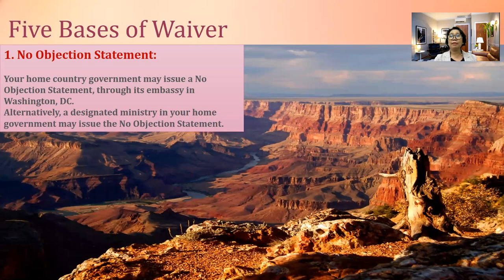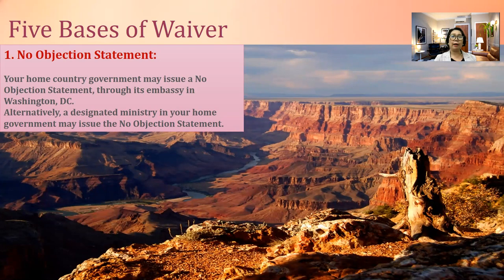There are five bases for securing a waiver. Number one is the no objection statement. This is a statement that you need to apply from your home country. Your home country government may issue a no objection statement through its embassy in Washington, D.C. Ultimately, a designated ministry in your home government may issue the no objection statement. In the case of the Philippines, you can secure your no objection statement from the Commission on Filipino Overseas or through the Foreign Affairs Office. If they grant you that, then you have to file it in the United States for your waiver.